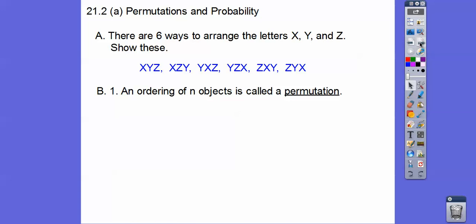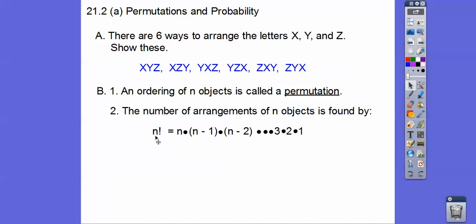Okay, so an ordering of N objects, like we did above, we ordered six objects here, is called a permutation. Permutations are ordering things, putting them in order. Okay, so the number of arrangements of N objects is found by this thing that's called factorial. So this N with an exclamation point is N factorial. So you start at the big number, and then you start decreasing one, and decreasing another one, all the way until you finally get down to three times two times one. So above, there was three letters. So we start at three, and then do two, and then down to one. So three times two times one is six. So there was six ways.